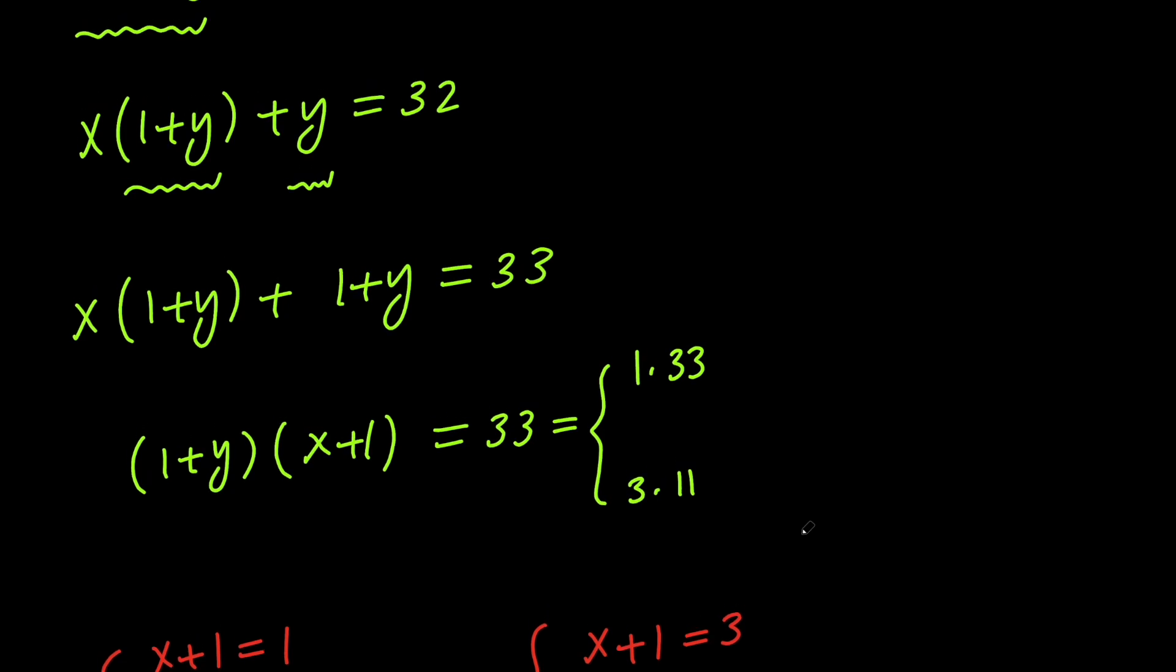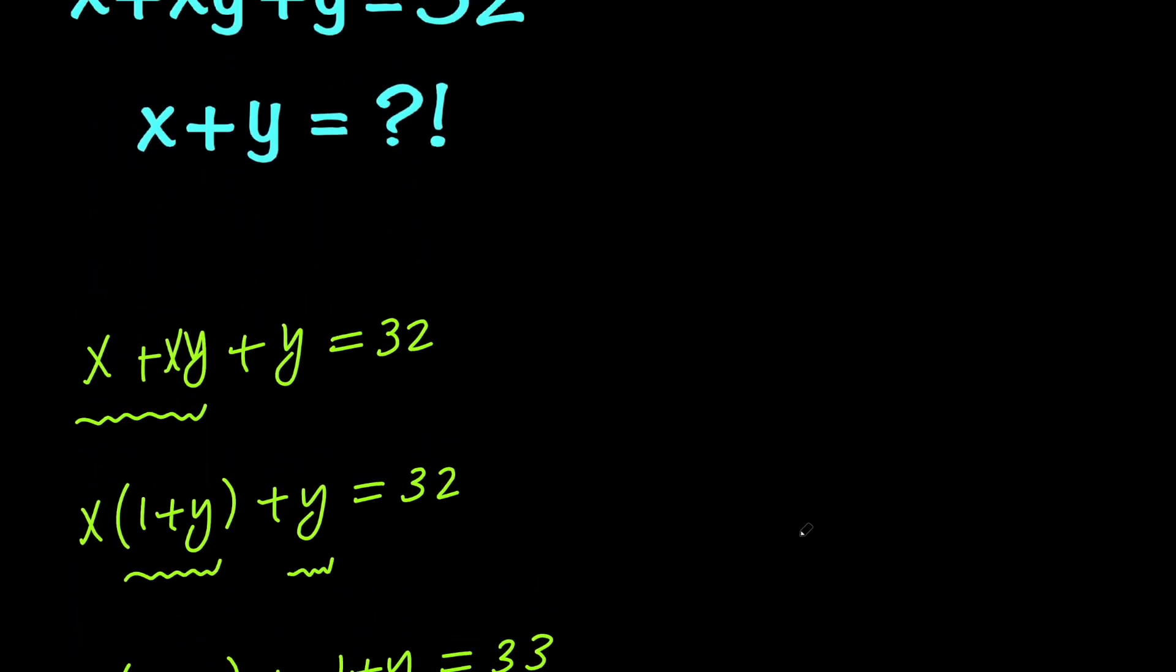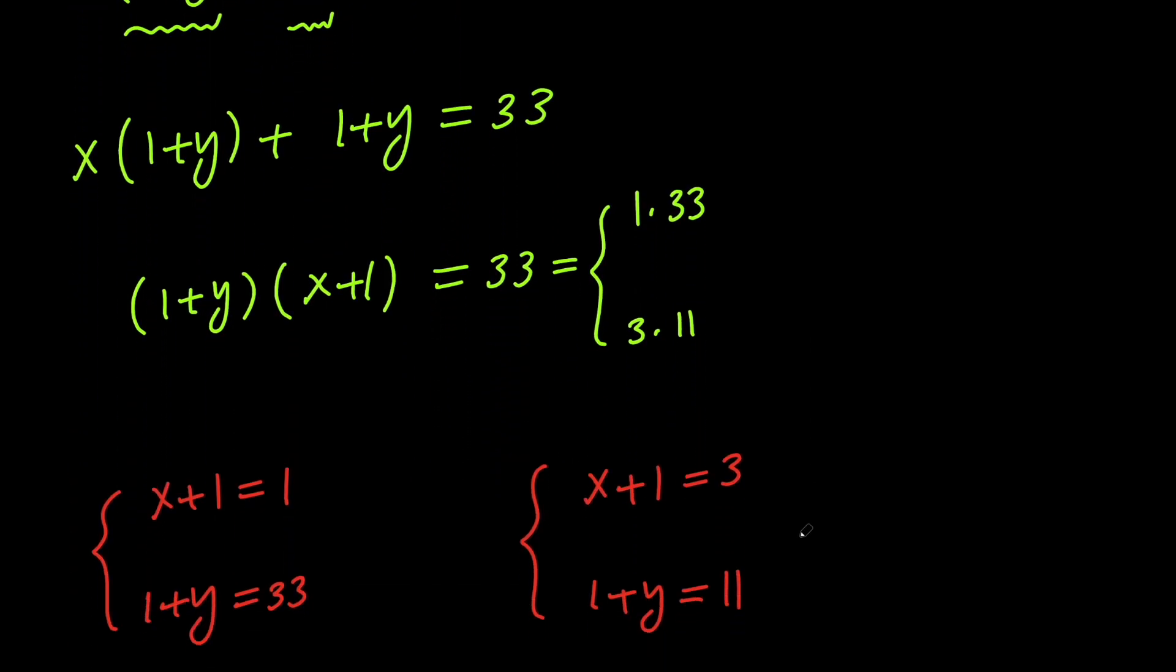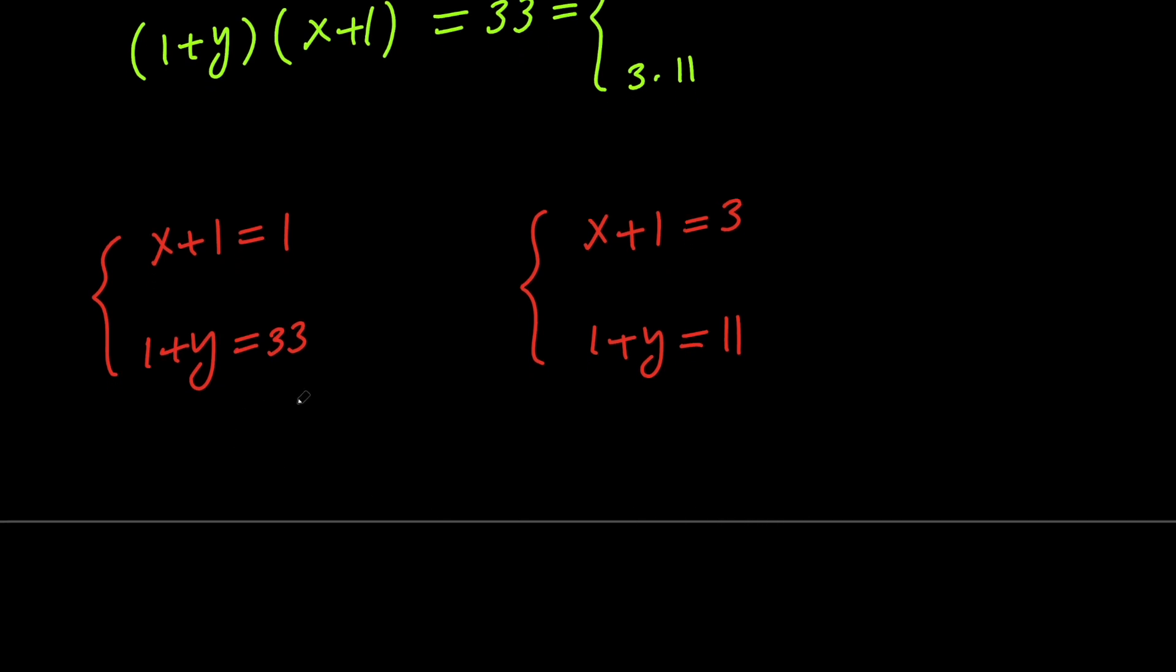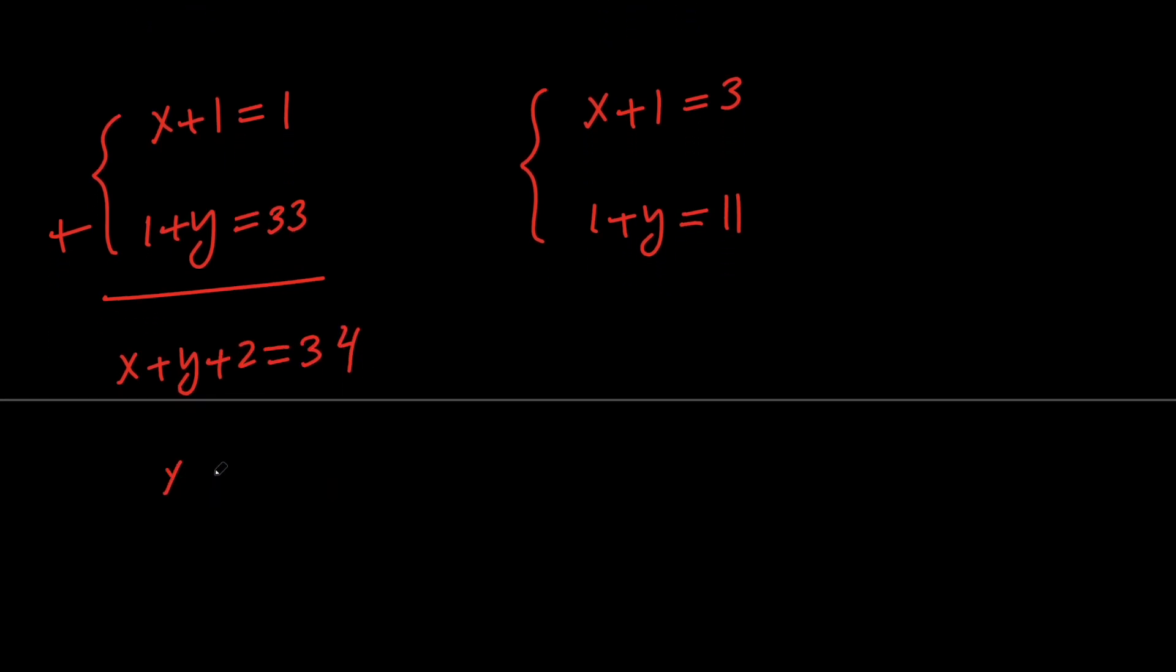Now, remember that we wanted to evaluate x plus y, so we need to go ahead and add these two. So we get x plus y plus 2 equals 34, which means that x plus y equals 32.